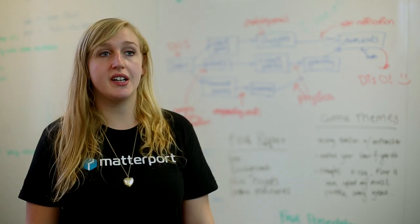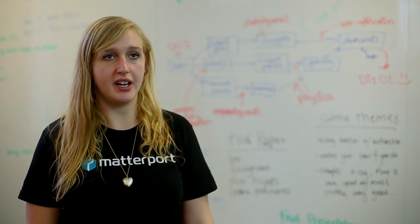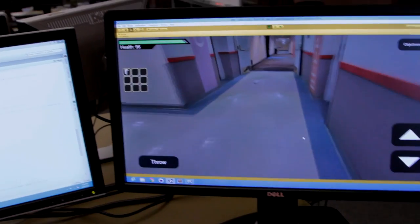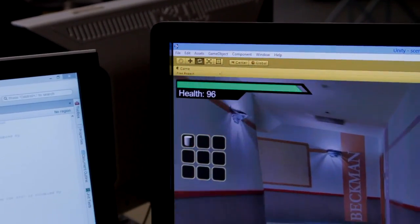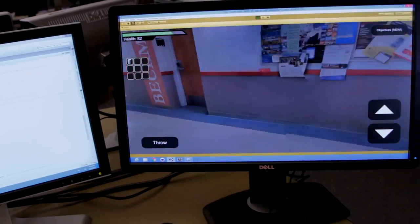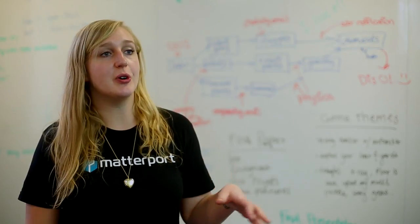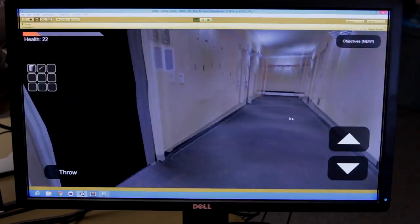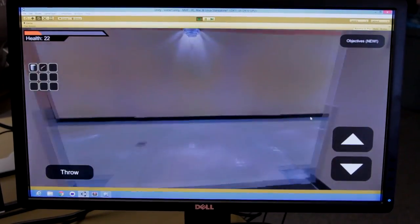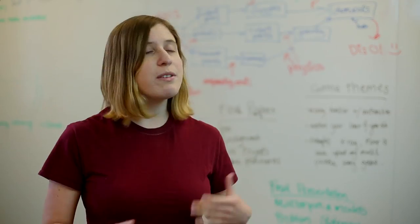The health bar keeps track of how much health the player has. If they run into any robots then their health decreases, and there's a hidden vending machine where they can go and get some more health and hopefully survive.